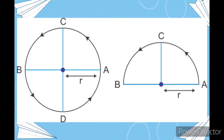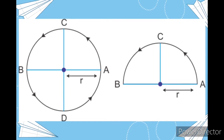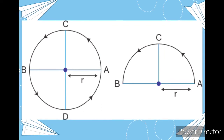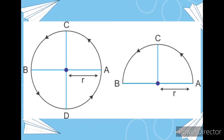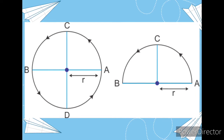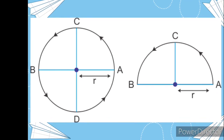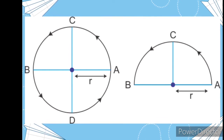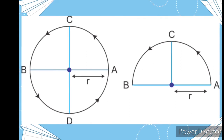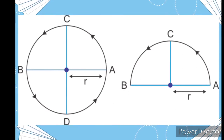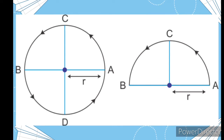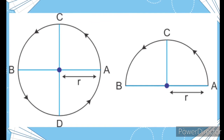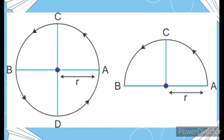Suppose a man is jogging in a circular path, traveling from A to B. The distance will be half of the circumference, which is pi r, whereas displacement will be the shortest path from A to B, which is the diameter, equal to two r. Now suppose he travels from A and comes back to A — the distance will be two pi r, the circumference of the circle, but displacement will be zero, since the initial and final positions are the same. This shows that displacement can be zero.